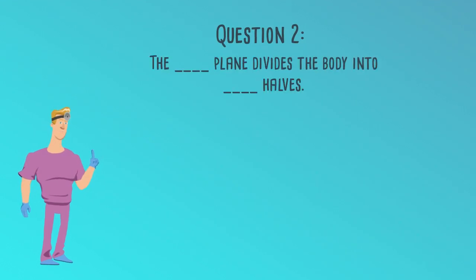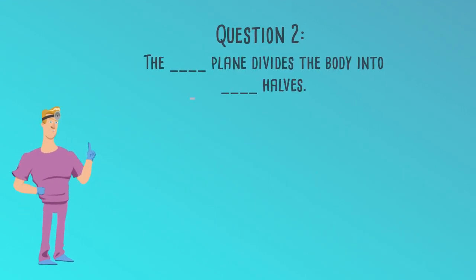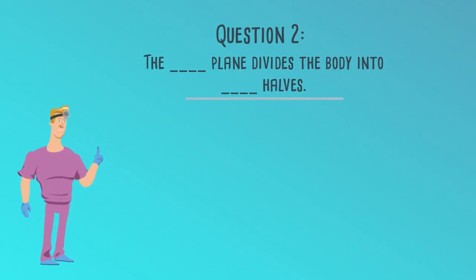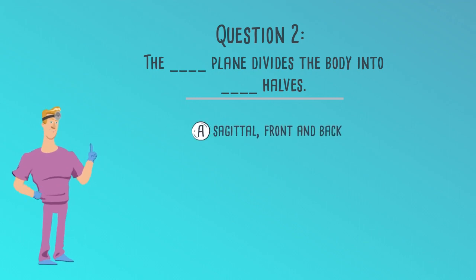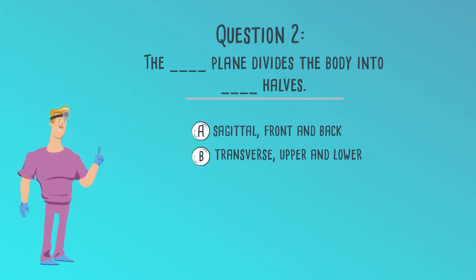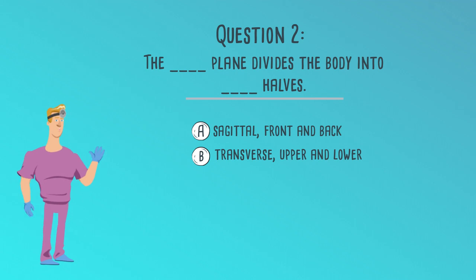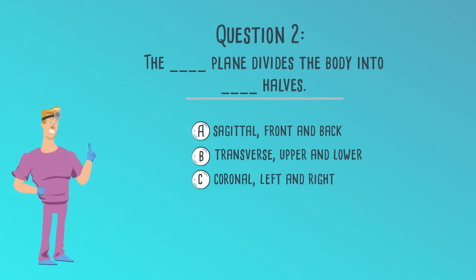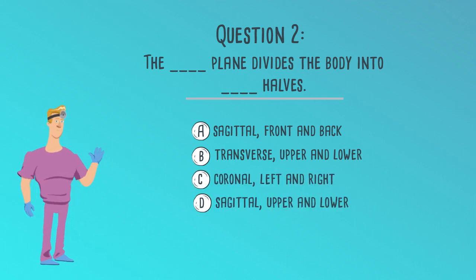Question 2. The blank plane divides the body into blank halves. A. Sagittal, front and back. B. Transverse, upper and lower. C. Coronal, left and right. Or D. Sagittal, upper and lower.